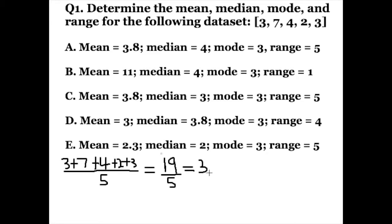We use a calculator and we get three point eight as the answer. Knowing that the mean is three point eight, we can eliminate answer B, answer D, and answer E as well, which leaves us with just answer C and answer A. So the mean is three point eight.